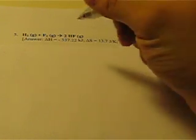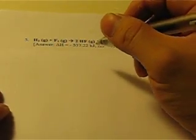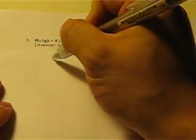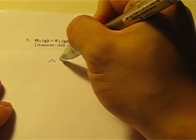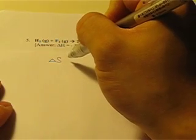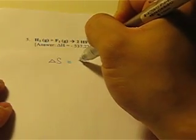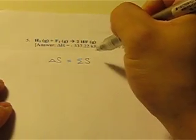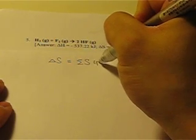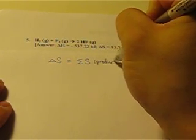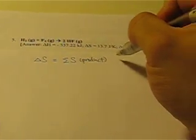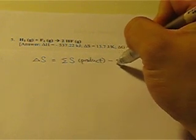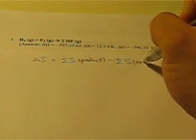So after calculation of the delta H, what we can do next is to find out the delta S. And very similarly, that delta S has a very easy equation to memorize, and this delta S is equal to the sum of the entropy of the product, minus the sum of entropy of the reactant.